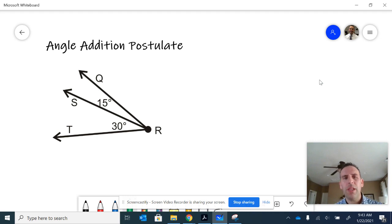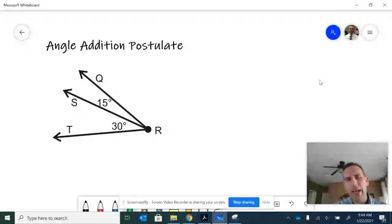Welcome to a lesson on the angle addition postulate. As you can see in the diagram, we have these two angles that we're going to call adjacent. Adjacent means they touch each other or share one of the sides. The top angle QRS has a measure of 15 degrees, and the measure of angle SRT is 30 degrees.